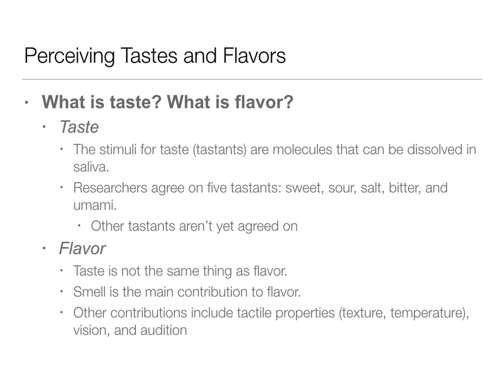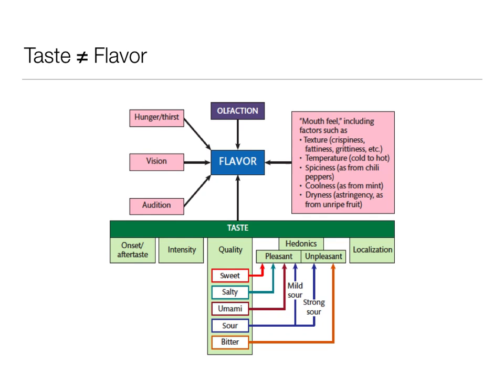This image shows us that taste and flavor are different things. Taste is a huge contributor to flavor — that's the green line — broken down into sweet, salty, umami, sour, and bitter, along with different pieces like localization of where in our mouth it was, the intensity, how long we had it, and whether we like it or not. Those components of gustation are included in taste.